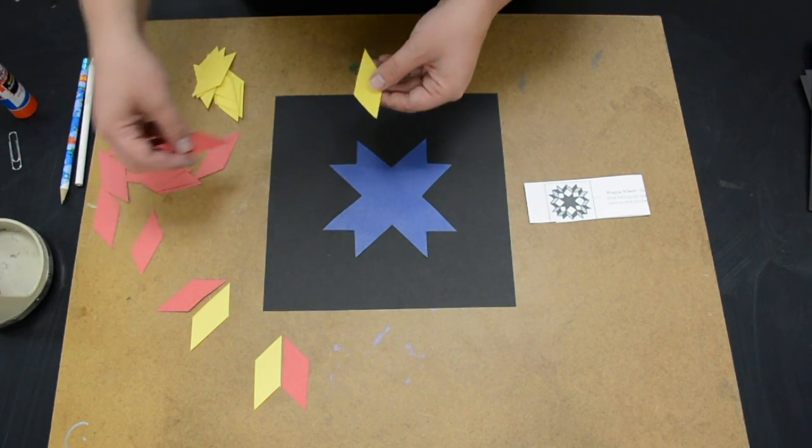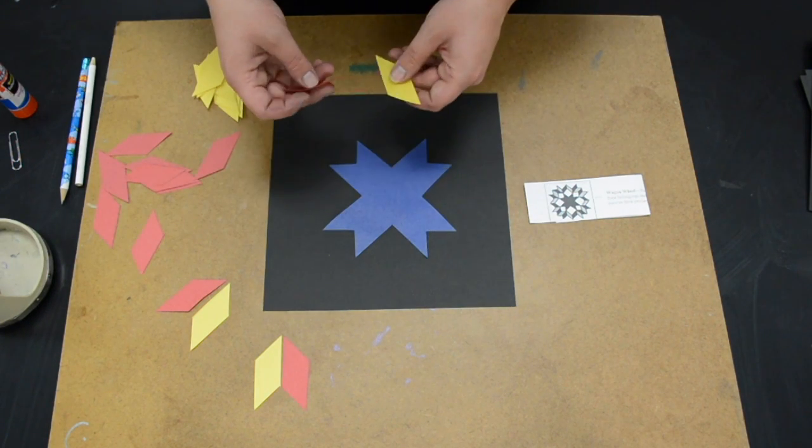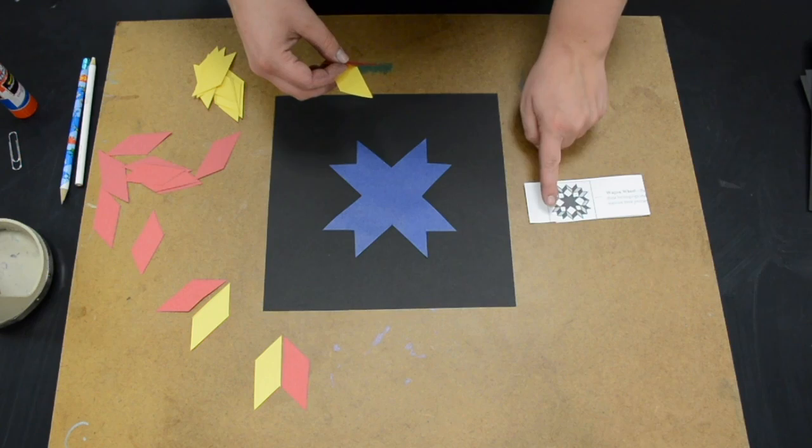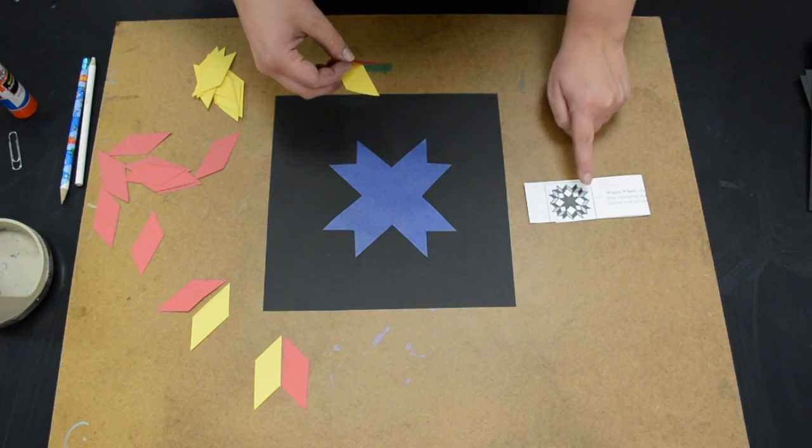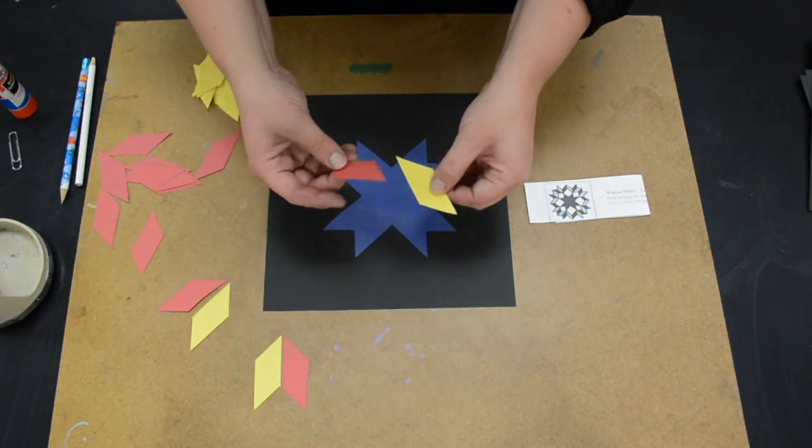And then I would just go ahead and lay them all out like that. You're going to need one, two, three, four, five, six. You're going to need eight pairs of these.